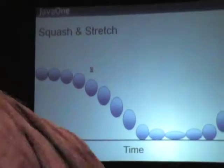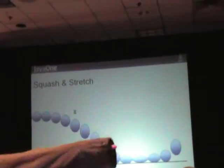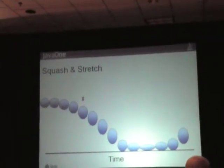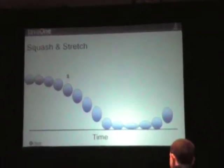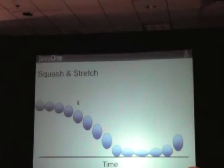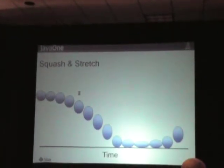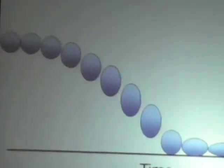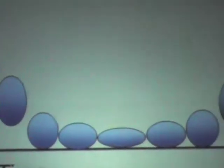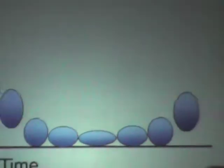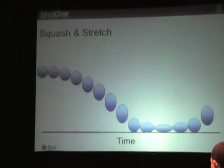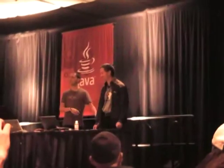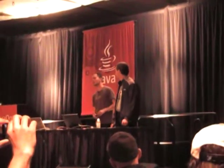Squash and stretch is one of the most widely used rules in cartoons. You can see here a good example of what it's all about. In real life, some bodies are totally rigid — I could throw an object at one of you and it would stay the same. This is going to be a very violent talk. You're going to hear us talk about punching each other — that's just what we do.